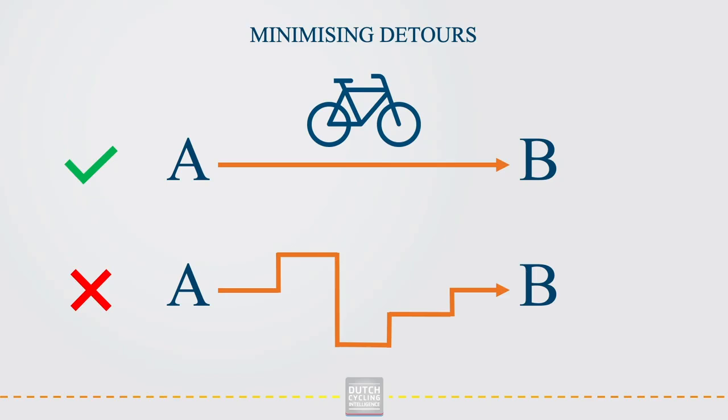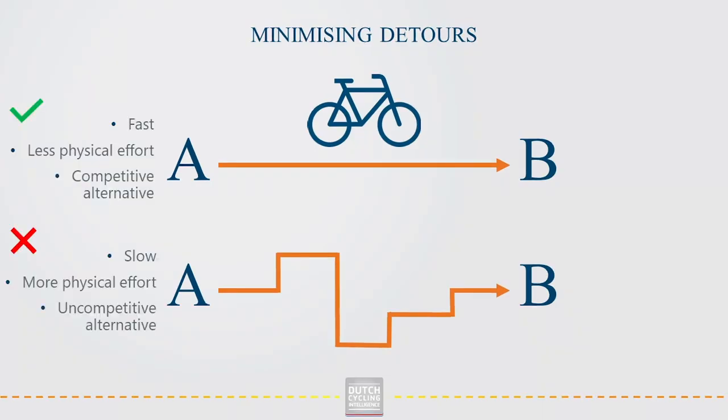Directness means offering the cyclist as direct a route as possible, with detours kept to a minimum. Why is this principle relevant? Because the bicycle is human powered and we do not want to waste energy on detours. And because we want fast connections and minimise delays as much as possible in order to make the bicycle a competitive transport mode.